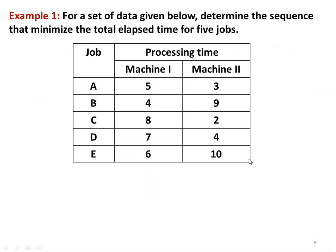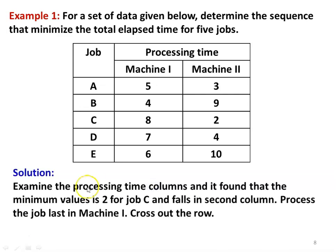We solve Example 1: determine the sequence that minimizes total elapsed time for 5 jobs A, B, C, D, E on two machines. Processing times for machine 1 are: A=5, B=4, C=8, D=7, E=6. For machine 2: A=3, B=9, C=2, D=4, E=10. Processing order is machine 1 then machine 2. Examining both columns, the minimum value is 2 for job C, which falls in the second column. So job C is processed last in machine 1.